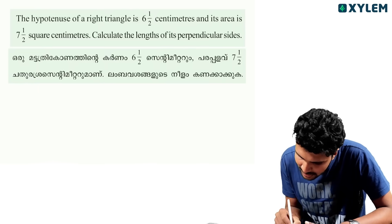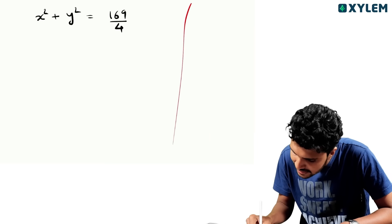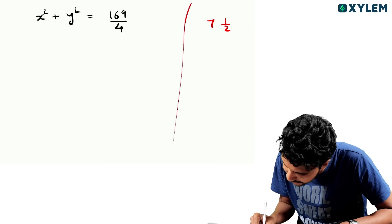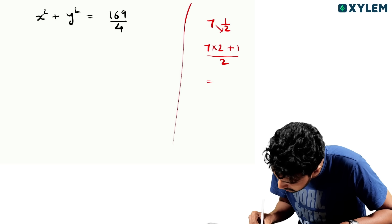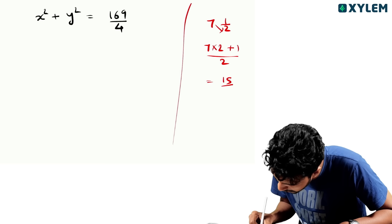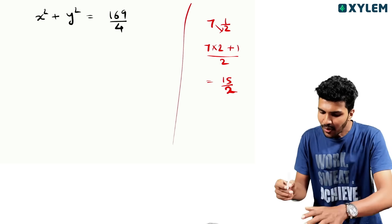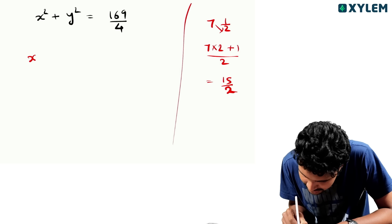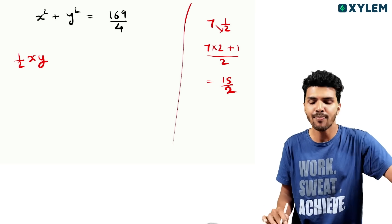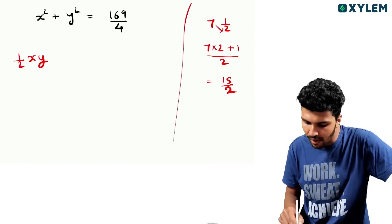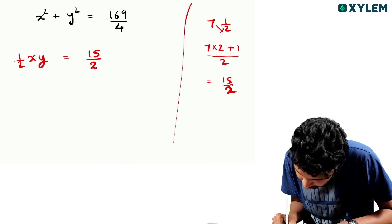The clue is the area. The area of a right triangle is 7 and 1 by 2. Area equals half into base into height. So half into x into y is equal to 15 by 2.